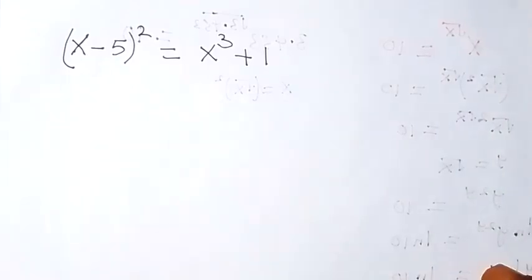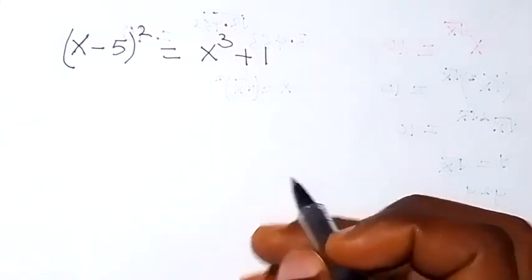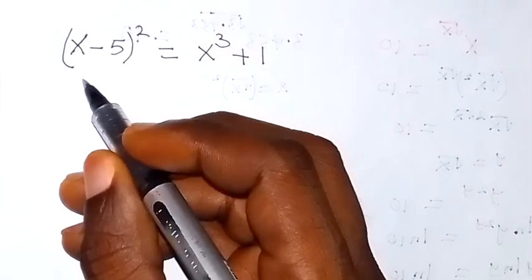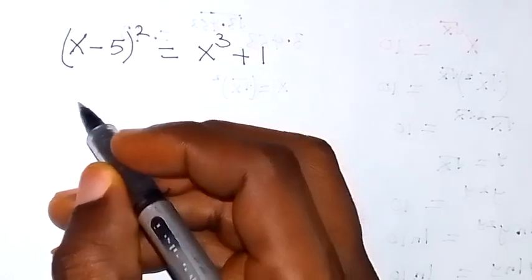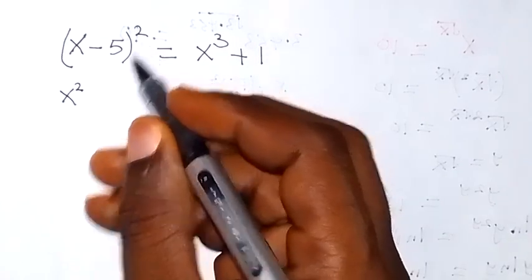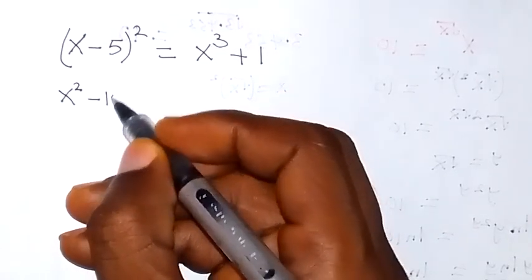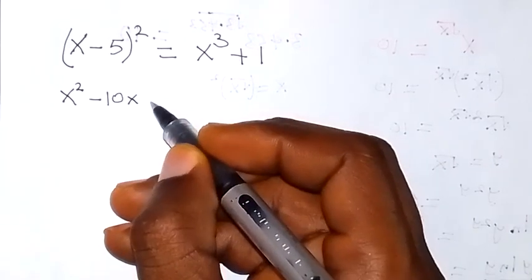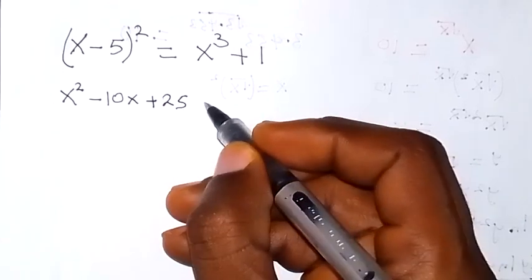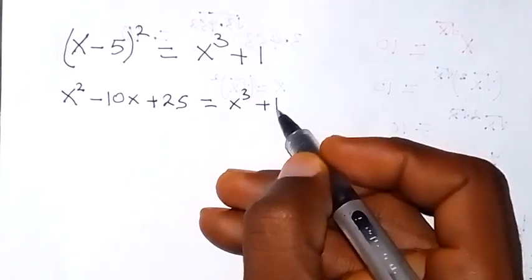Good day. Let's solve this problem and follow to the end and see how it is solved. We can expand these brackets: this will become x squared, then minus 2 times x times 5, that's minus 10x, then plus 5 squared, that's 25, then equals x raised to the power 3 plus 1.